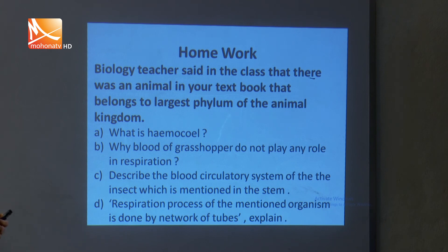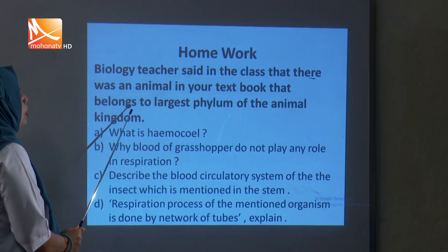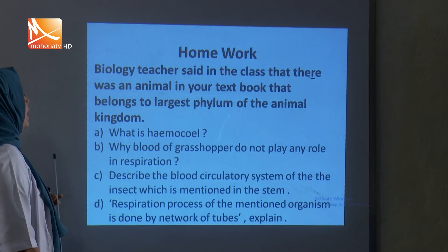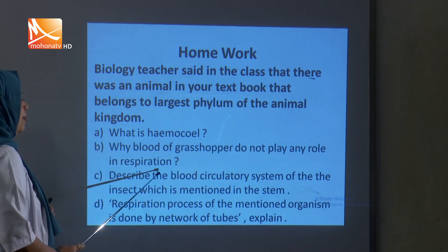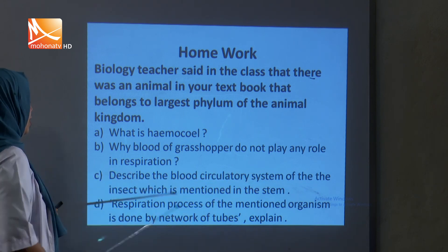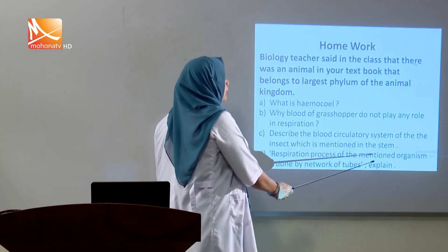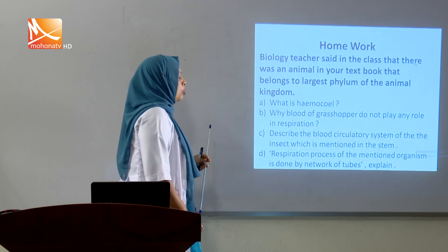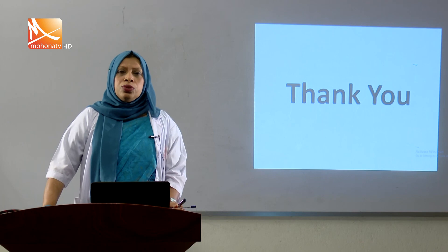That is all, dear students. Now you have some homework. Your biology teacher said there was an animal in your textbook belonging to the largest phylum of the animal kingdom. The questions are: A) What is hemocoel? B) Why does the blood of grasshopper play no role in respiration? C) Describe the blood circulatory system of the insect mentioned in the stem. D) The respiration process of the mentioned organism is done by a network of tubes — explain. Thank you, dear students, see you soon.